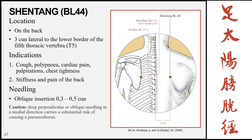The next point is Shentang, Bladder 44, located on the back three cun lateral to the lower border of the fifth thoracic vertebra T5. Indications are related to the location: stiffness and pain of the back, and because the heart and lungs are in this region, it can treat lung conditions such as cough, polypnea, and chest tightness, as well as heart-related conditions such as cardiac pain and palpitations. Needling is oblique insertion 0.3 to 0.5 cun with caution against deep perpendicular or medially oblique needling.